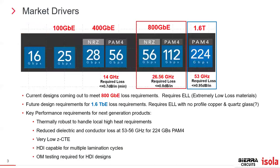The market drivers really come down to the next generation of data rates and frequencies. Current designs are in the 112 gigabits per second range, at 26 to 28 gigahertz frequencies. People are also looking at PAM4 224, which is in a 53 to 56 gigahertz range.